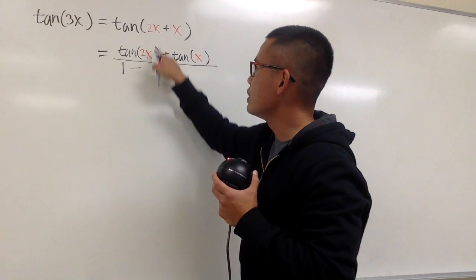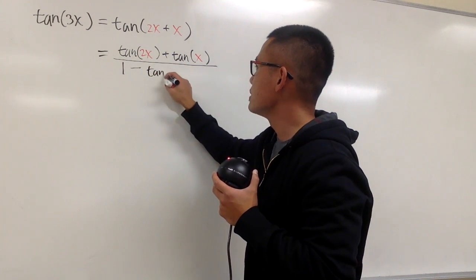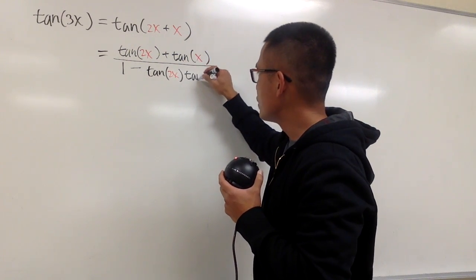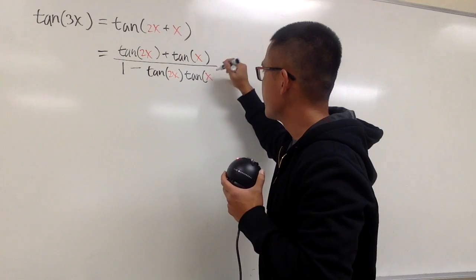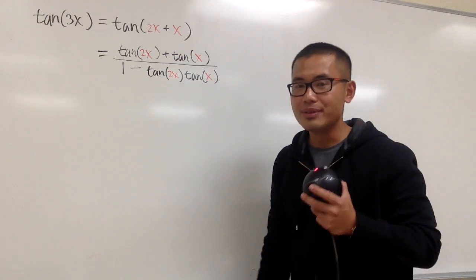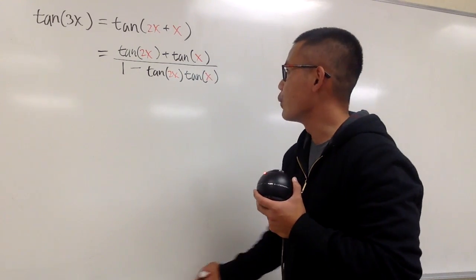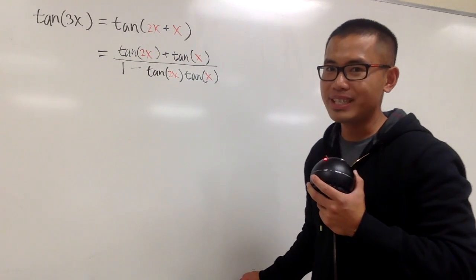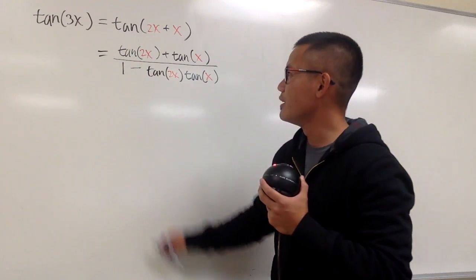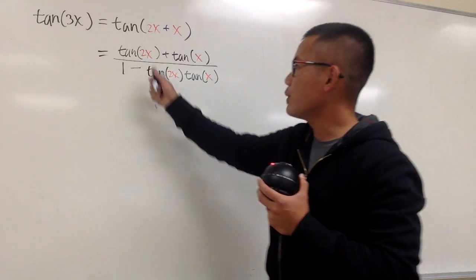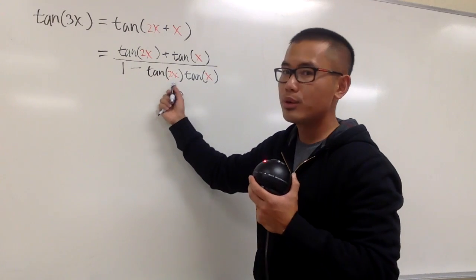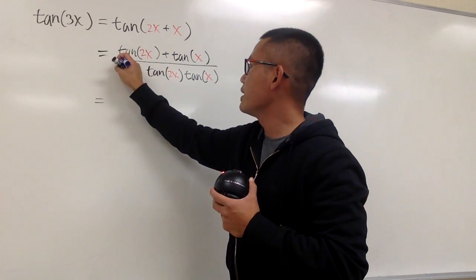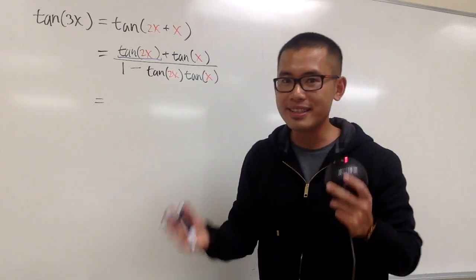We minus tangent of the first, so tangent of 2x, and then we multiply by tangent of the second, which is x. Now there are two issues. The first one is we have this tangent of 2x — but that's not bad at all, because we have the double angle identity for tangent of 2x. Likewise, we can also apply the double angle identity for this as well. So let's fix that.